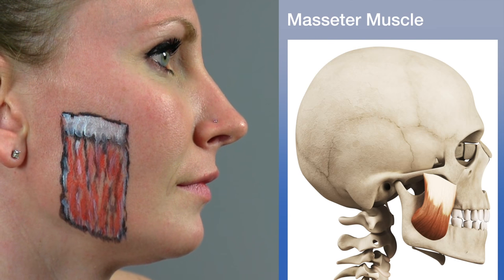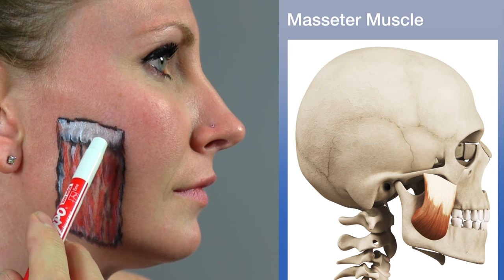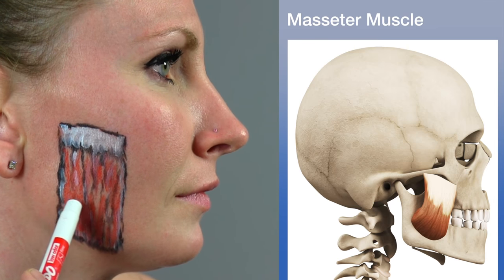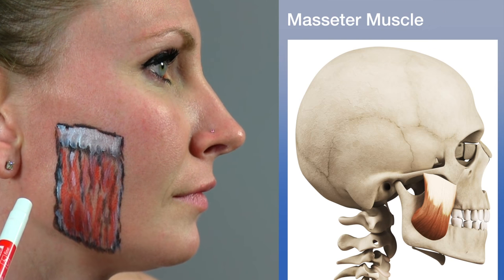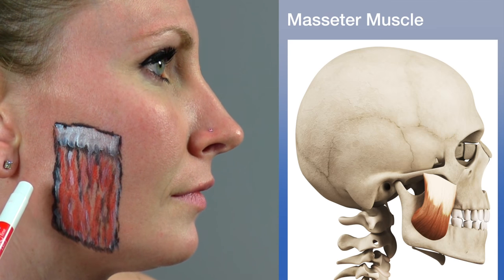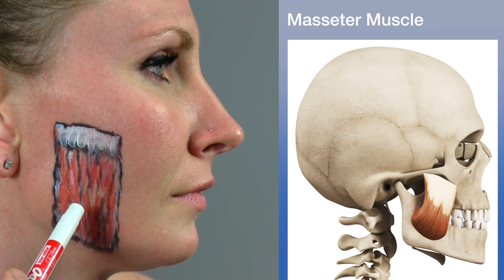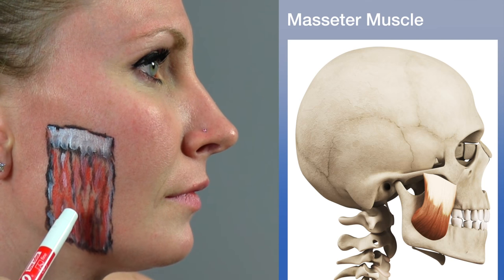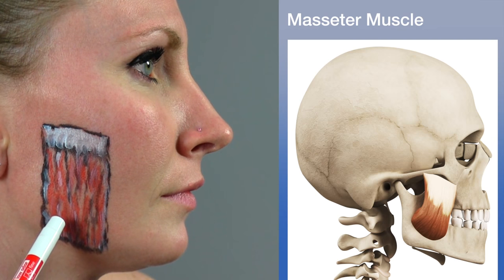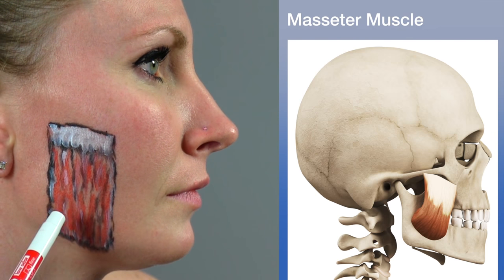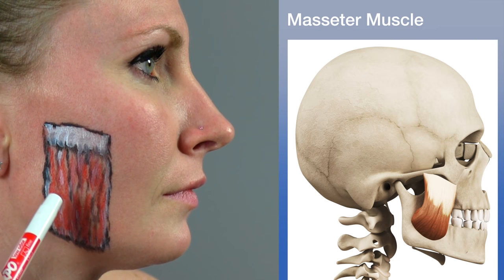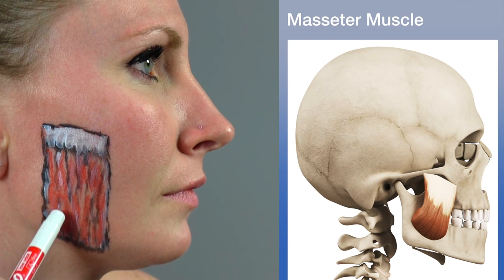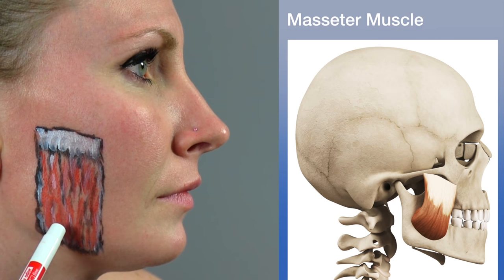Let's go over the masseter muscle. The masseter muscle's origin is the zygomatic arch and the maxillary process of the zygomatic bone. It inserts on the outer surface of the mandible — the ramus and angle of the mandible. The masseter is a powerful muscle that lies obliquely on the outside of the jaw. It has a quadrilateral shape and is anchored along the lower edge of the zygomatic arch. The masseter has a superficial portion and a deep portion; the superficial portion forms the surface of the side of the face.